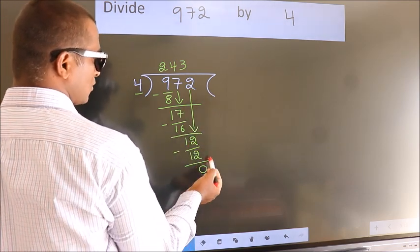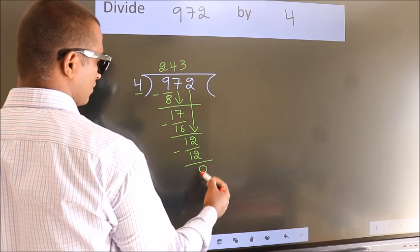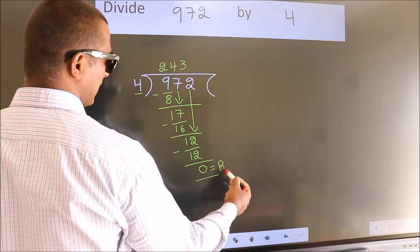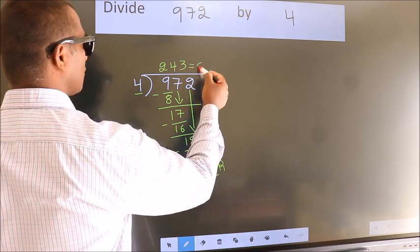No more numbers to bring it down. So we stop here. This is our remainder. This is our quotient.